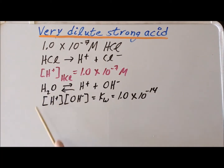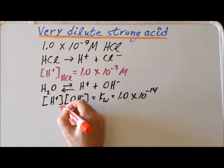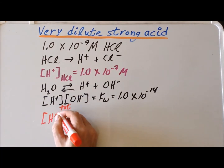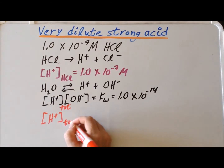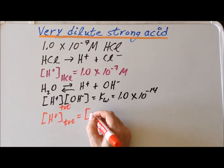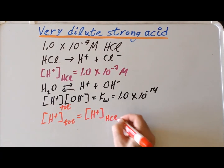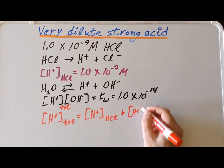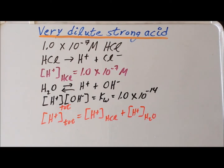It is important to note that this equilibrium constant expression holds whether we have pure water or other ingredients dissolved in the water. So the H⁺ in this expression is actually the total amount of hydrogen ion in the solution. The total H⁺ has two sources: one from the strong acid HCl, written with a subscript HCl, and some from the autodissociation of the solvent, written with a subscript H₂O.